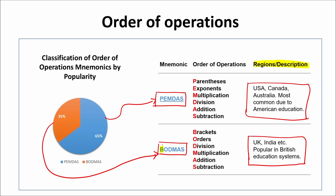For further calculation I'm going to use PEMDAS order of operation. The letters stand for: Parentheses, Exponents, Multiplication, Division, Addition, and Subtraction — that's why we call it PEMDAS. We go from the top to the bottom: first parentheses, next exponents, then multiplication and division, then addition and subtraction.